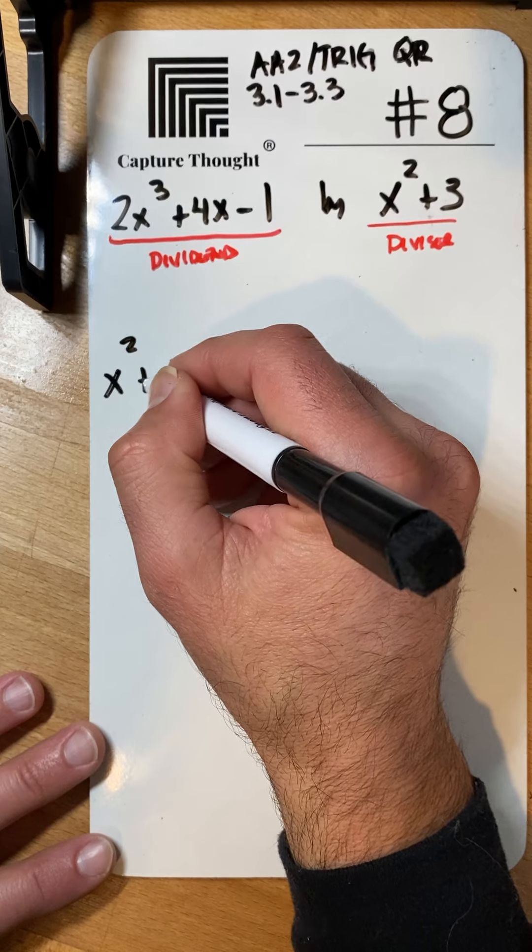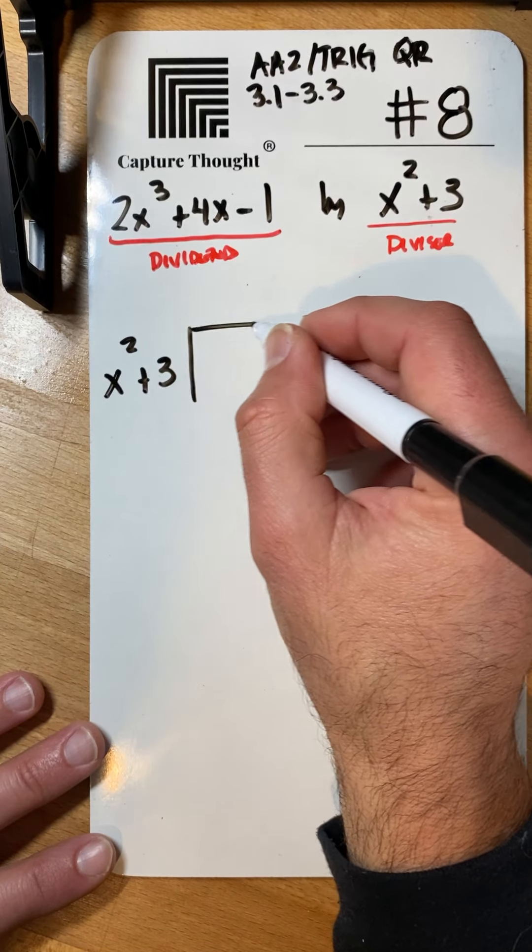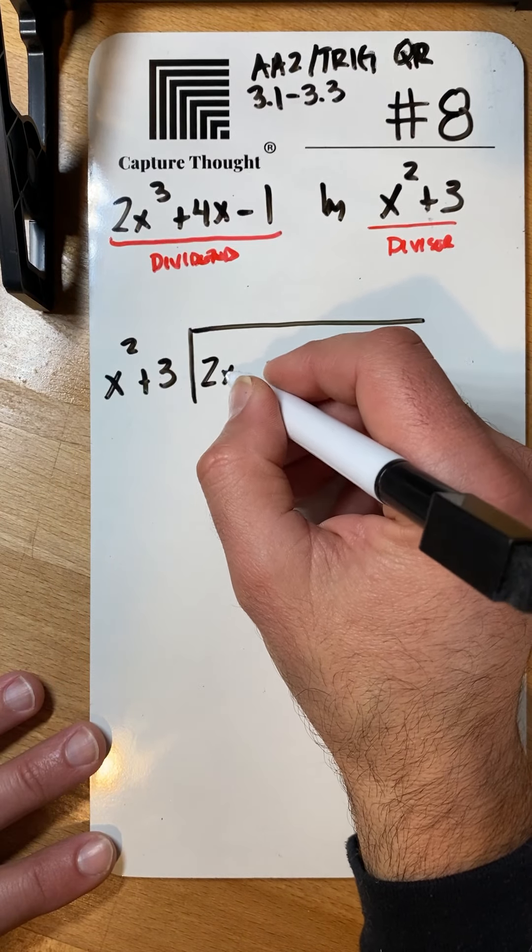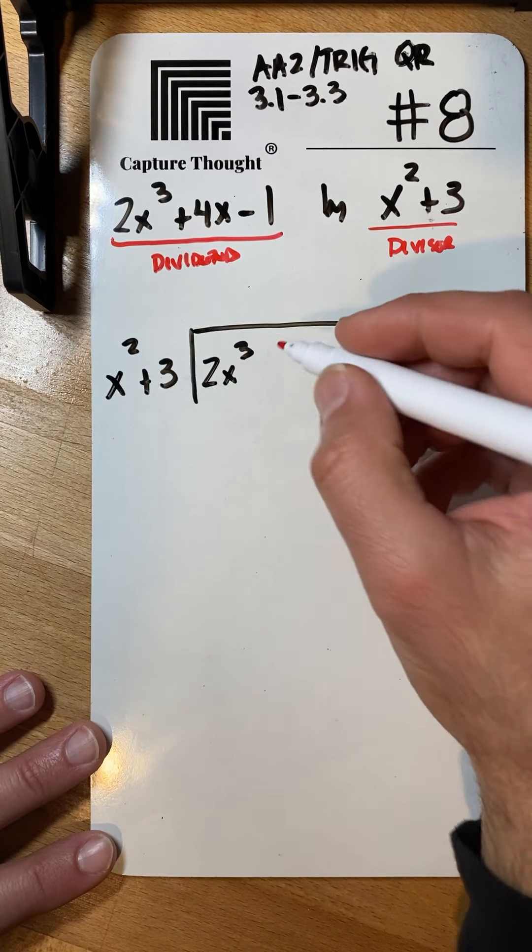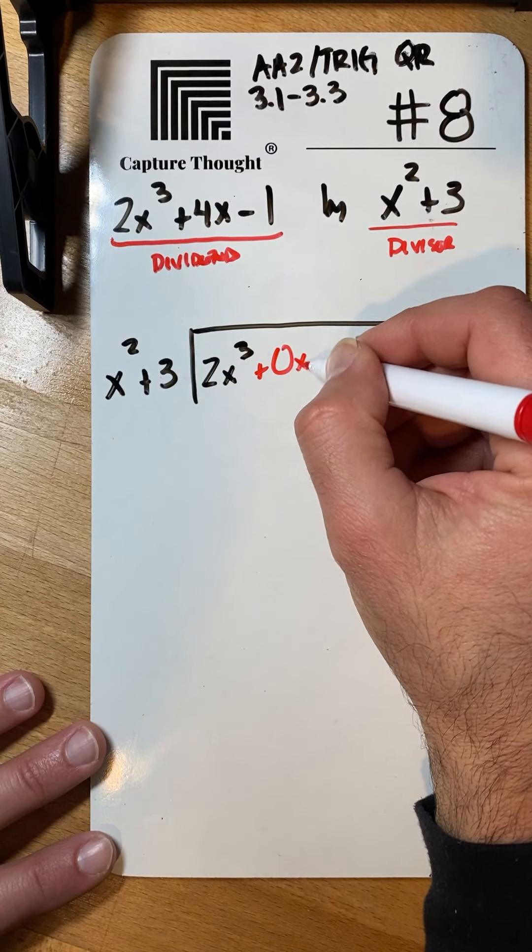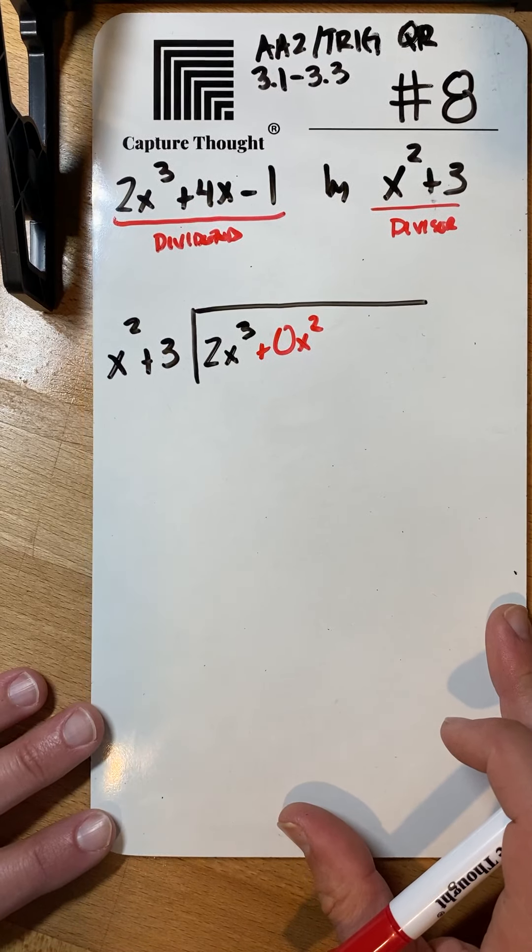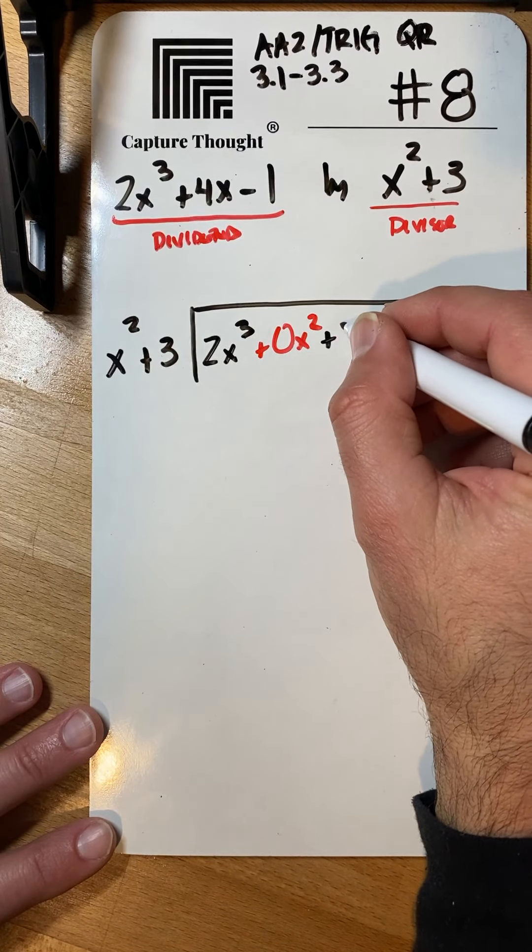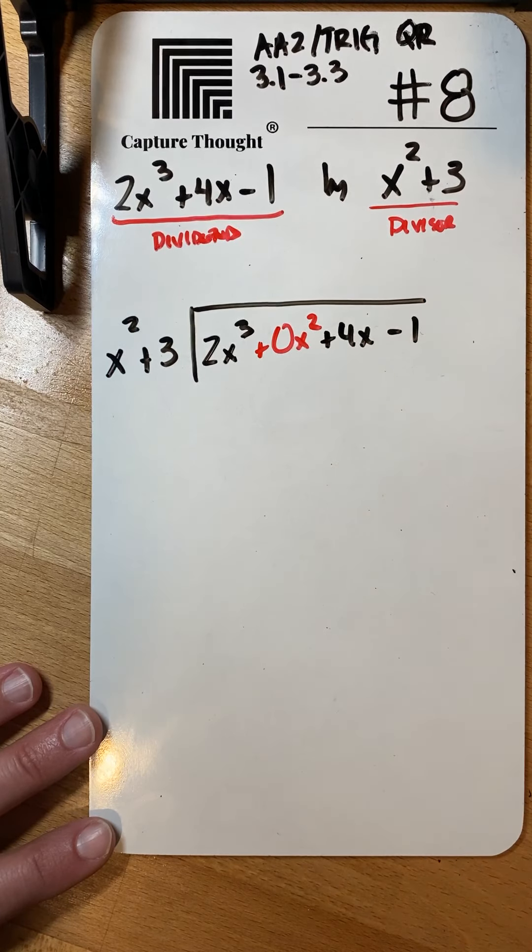x squared plus three, divide, underneath my dividend here, I'm going to do a two x cubed. Now I don't have an x squared, so I'm going to put a zero x squared. You want to have a placeholder in there in case you need it to line up your x squared terms, plus a four x and then a minus one.